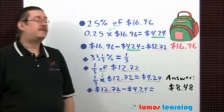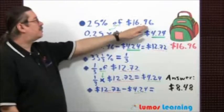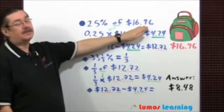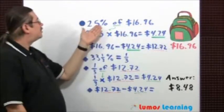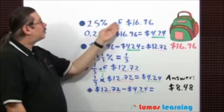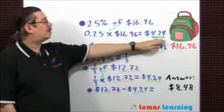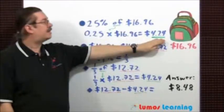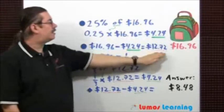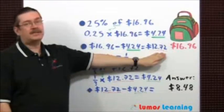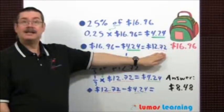The first thing I'm going to do is figure out what is 25% of the original price of the backpack of $16.96. Change your percentage into a decimal; the word 'of' usually means multiply. Perform the multiplication and you get $4.24. Now subtract this from the original price of the backpack and you get a discount price of $12.72.